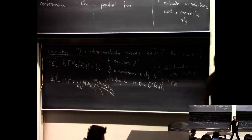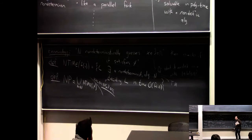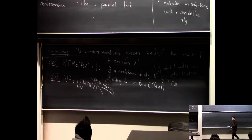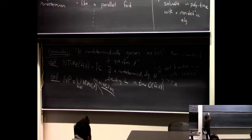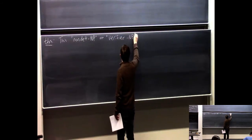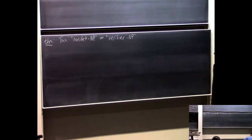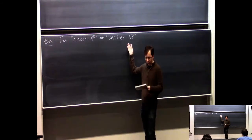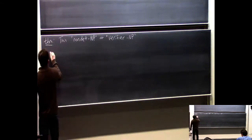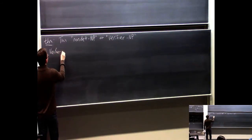Let's prove that the non-determinism-based definition of NP is literally the same set of languages as our verifier-defined NP. We're proving two sets are equal, so the proof comes in two parts. First: everything in NP by the verifier definition is also in NP by the non-deterministic definition — then I'll do the reverse. So we do: verifier version implies non-deterministic version.